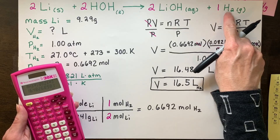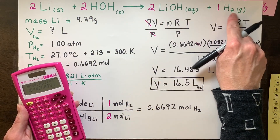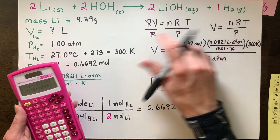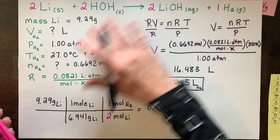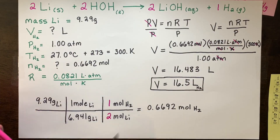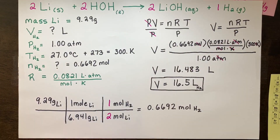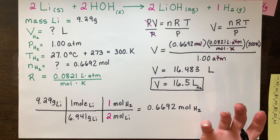Remember, hydrogen is diatomic. So if you would have written this balanced equation without H₂, it would have caused massive errors from beginning to end. On to the second type of way we're going to calculate the volume — if it's at STP.